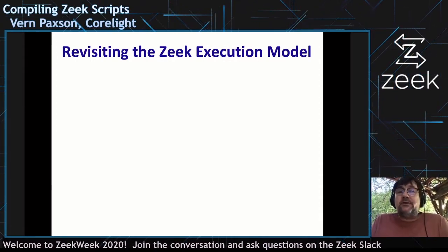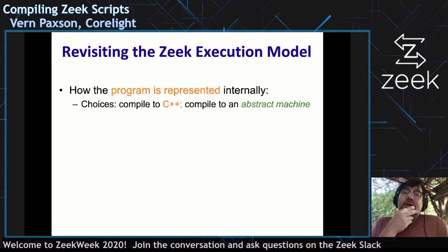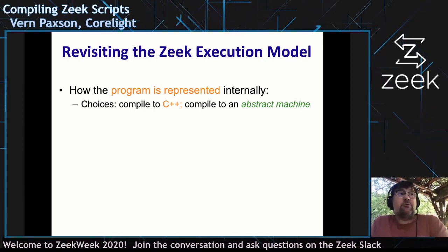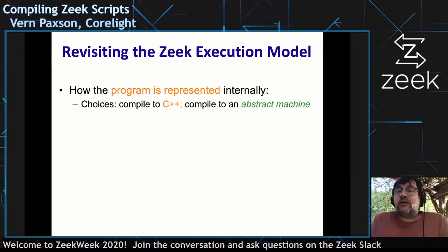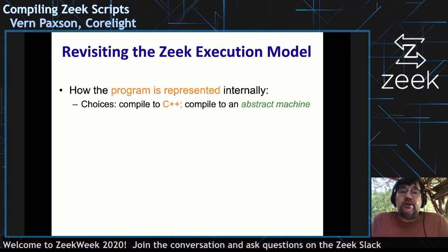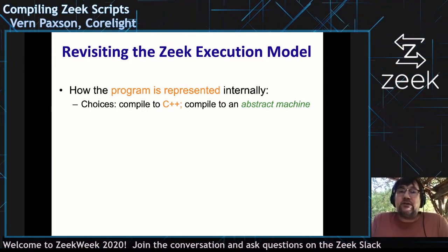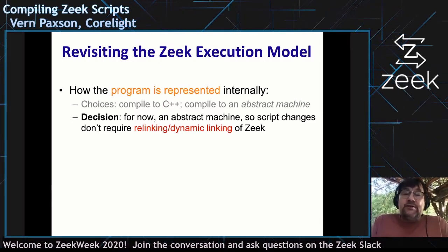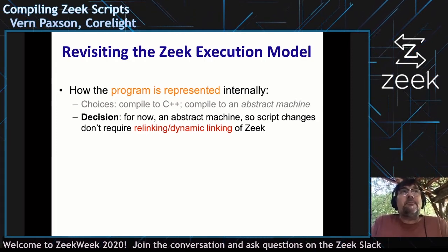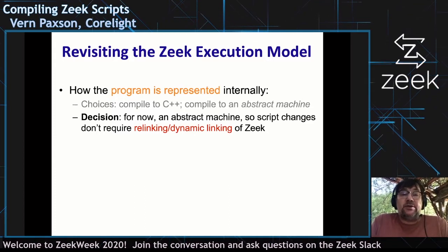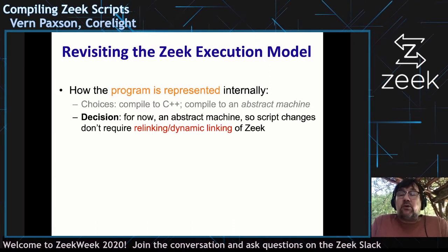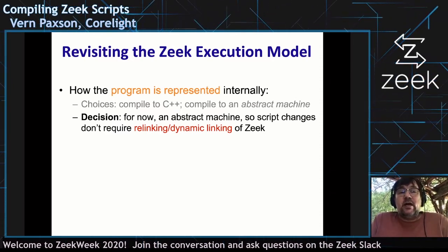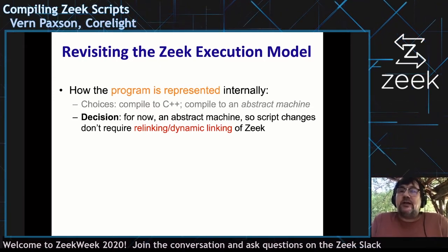So let's talk about a different execution model. If we want to change the representation of the program for more efficient execution, we could turn it into C++ and then separately compile that. Or we could compile it to an abstract machine — sort of assembly language — a low-level representation that is interpreted but potentially a lot more efficiently. The decision I made, at least for now, is to compile to an abstract machine. The reason is that the toolchain for users to have their scripts compiled is simple — it's all inside a single Zeek execution and does not require separate compiling and dynamic linking of scripts. I do try to leave enough abstraction that switching to C++ compilation is not a huge amount of work, but it's certainly not a small amount either.